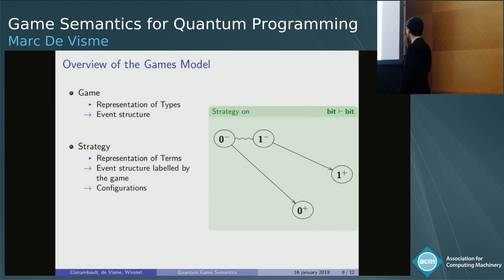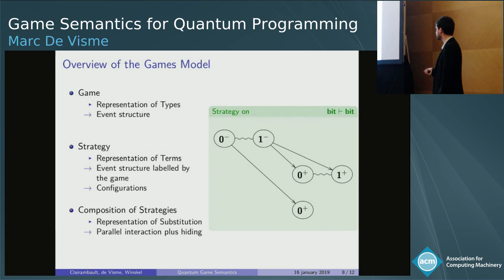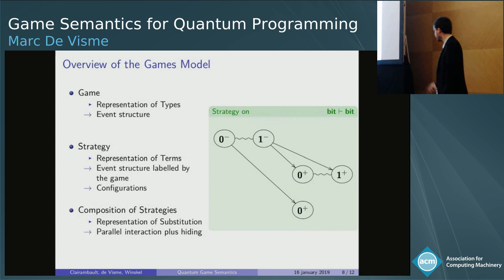So this will be the term x under the context x: if the context is false, the term is false; if the context is true, the term is true. You can do more advanced strategies for more complex terms — for example, if the context is false we are false, and if the context is true we are non-deterministically false or true. An important notion in strategies is configurations, which are reachable states of events. Another notion that is quite useful is the semantic representation of substitution of terms, which is the composition of strategies — technically that's parallel interaction plus hiding.